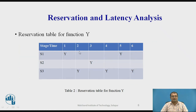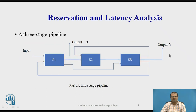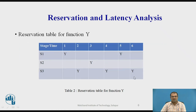Similarly, the reservation table for function Y shows three stages S1, S2, S3. The flow goes S1 to S3, then S3 to S2, then S2 to S3, then S3 to S1, then S1 to S3 — a mixture of feedback and feed forward connections — and the final output Y is delivered at stage S3.